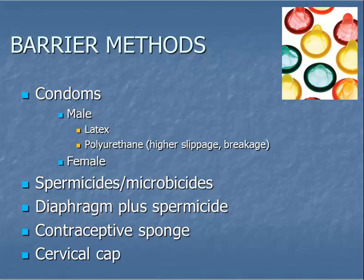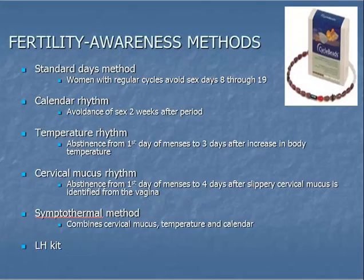Non-hormonal barrier methods for contraception are listed here. You should encourage your high-risk patients to use condoms, in addition to their usual method for contraception, to provide protection against STDs. Occasionally, couples may wish to use the timing of the woman's menstrual cycle to predict ovulation and avoid pregnancy. There are several ways to do this, listed on this slide. These methods require strict attention to timing and also require that a woman's cycles occur regularly.